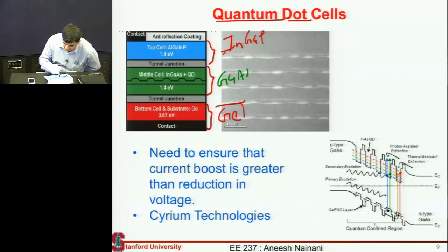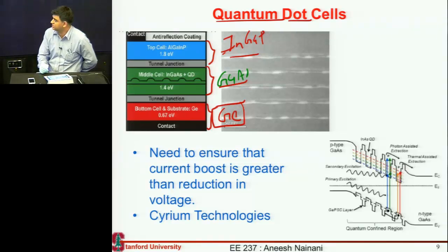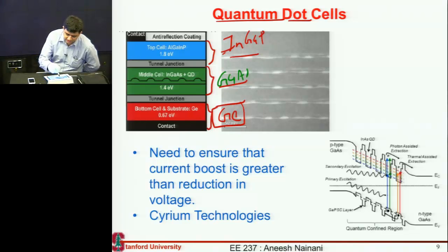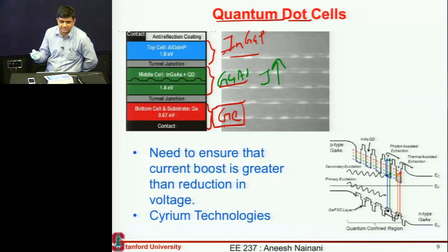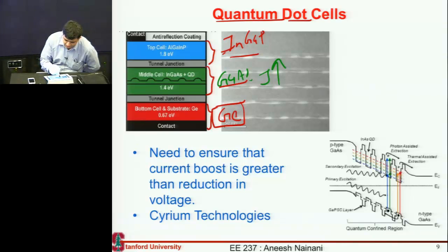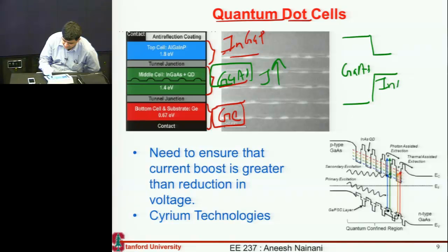In this cell, the bandgap or my current is essentially limited by these top cells. The germanium has a much larger current, but since these two top cells have much lower current, the overall cell performance is limited. So if I can somehow increase the current of this middle cell, it would help in increasing my overall cell efficiency. The way I increase the current of this middle cell is that I take this gallium arsenide and insert these quantum dots which are indium arsenide which has a much smaller bandgap compared to gallium arsenide.